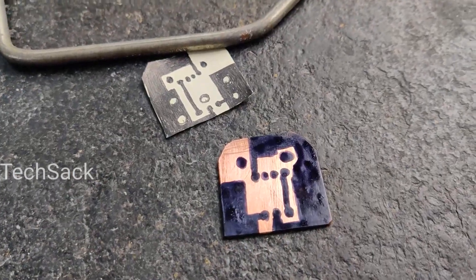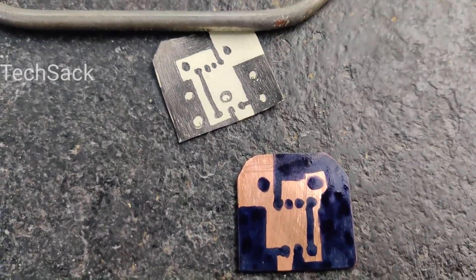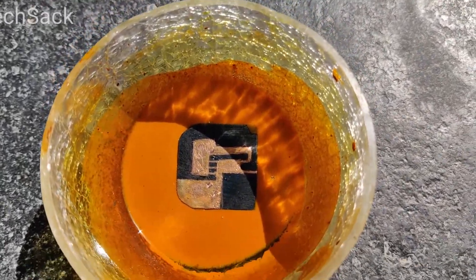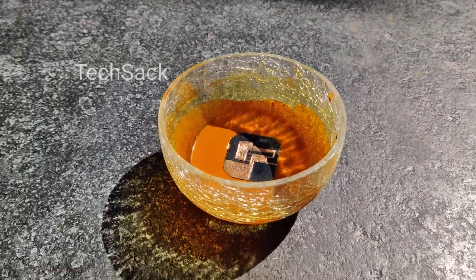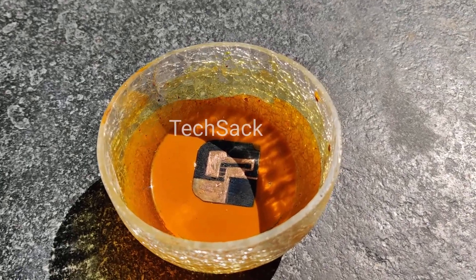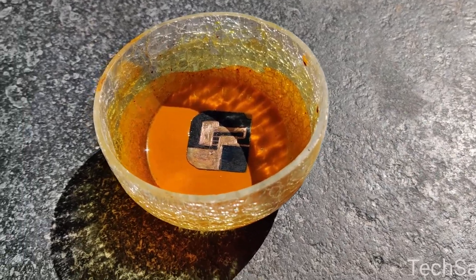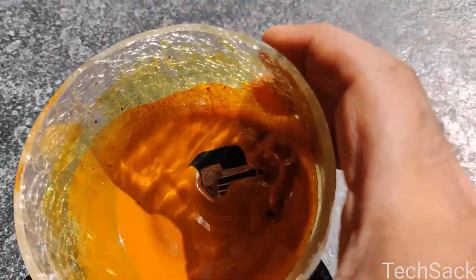So my PCB is ready for etching. This is how we are going to insert the PCB in ferrous chloride solution which will take over the extra copper and keep the copper that is under the paint. So let's begin doing the etching.